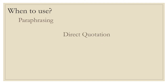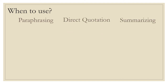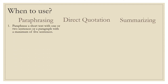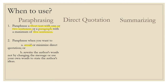When to use paraphrasing: you usually paraphrase a short text with one or two sentences, or even just a paragraph with a maximum of five sentences, so you just focus on the paragraph. Use paraphrase when you want to avoid or minimize direct quotation. Rewrite the author's words without changing the message.